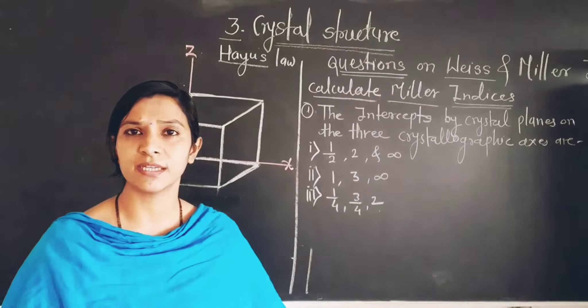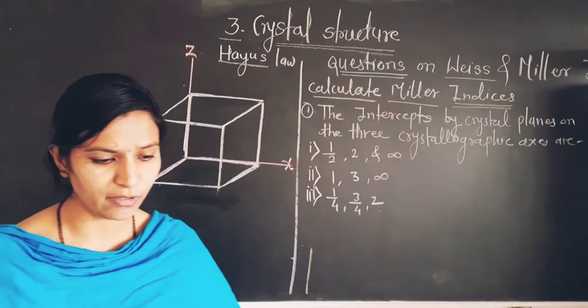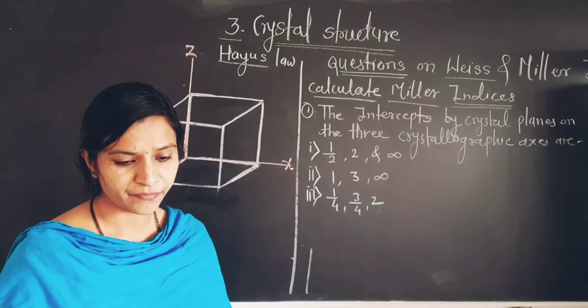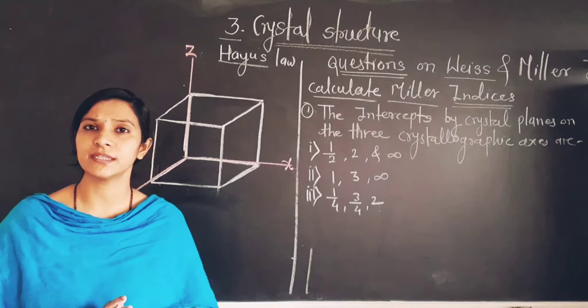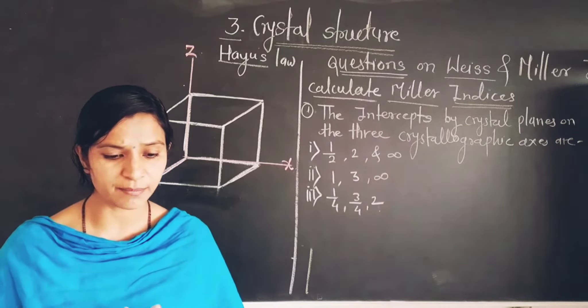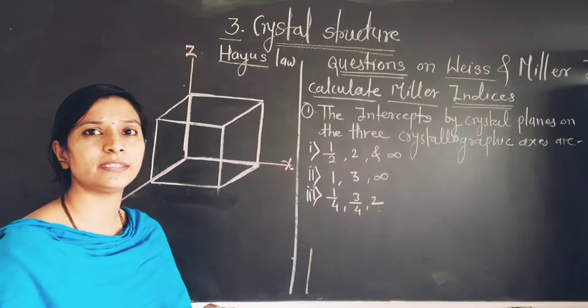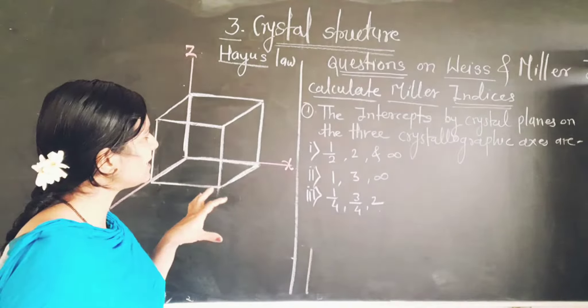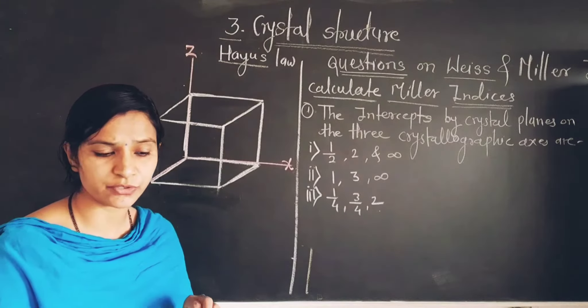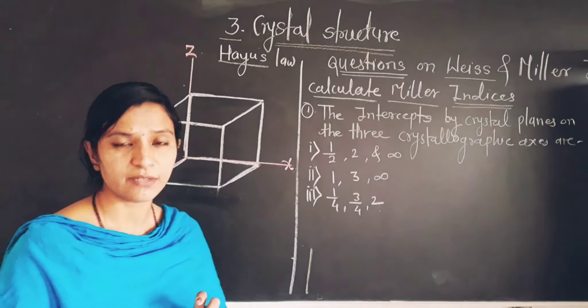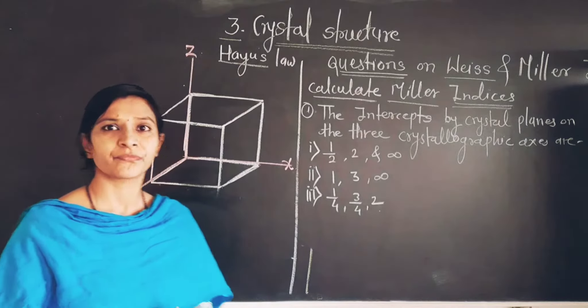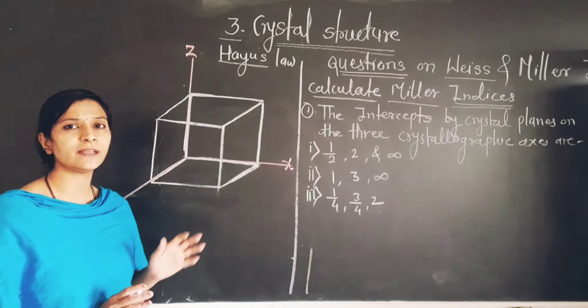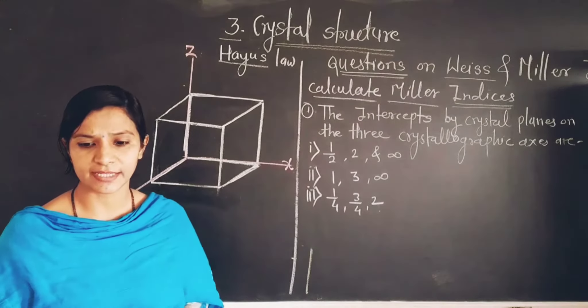First of all, we should understand what is the Haüy law or what is the rationality of indices. The method of designating or indexing the planes in a crystal is known as the Haüy law. This rationality of indices was first introduced by a physicist.